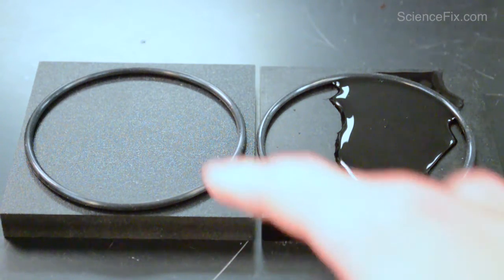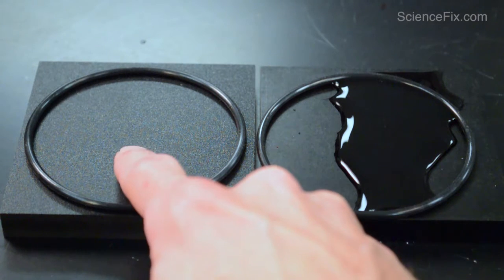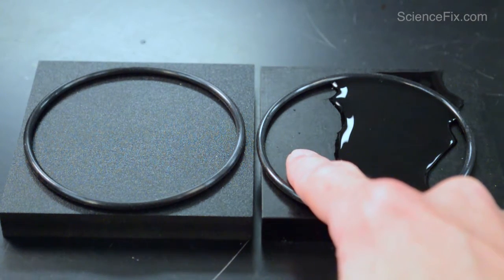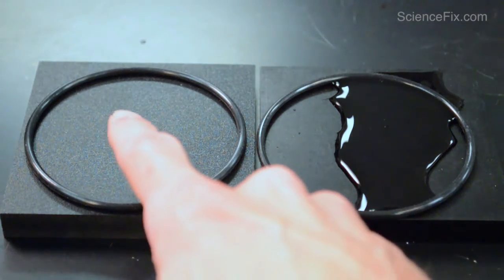Let's take a look at the block. If we were to feel for temperature, the one on the left feels pretty much at room temperature. The one on the right is extremely cold to the touch. Why is that?